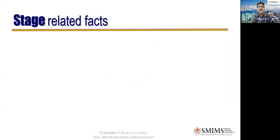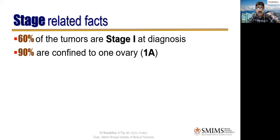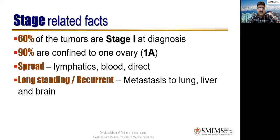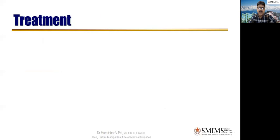Stage-related facts: 60% of tumors are stage 1 at diagnosis. 90% are confined to one ovary — stage 1A. We can save the other ovary, important because we are dealing with a young girl who may be unmarried and wanting children. Spread can be lymphatic, blood, or direct. Longstanding or recurrent disease can metastasize to lung, liver, and brain. Late manifestations include metastasis to mediastinum or supraclavicular lymph nodes.